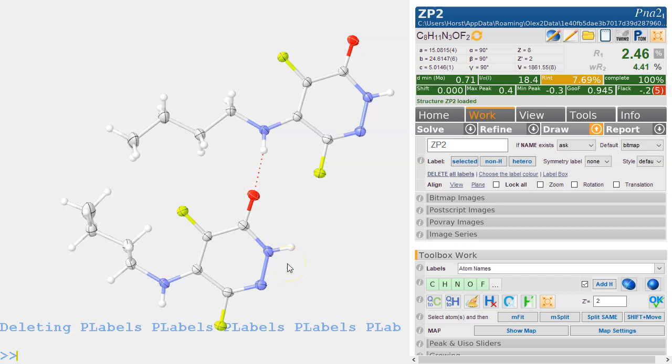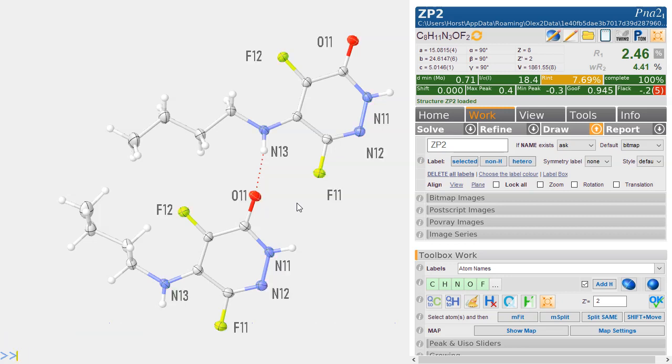You can double click on that. Control A will now select all the labels. Delete deletes all the labels. If you go SEL $N $F $O, so these are all the hetero atoms we've got in here, and type label without any extensions, then you just get the normal labels without the residue number, which of course is a bit confusing.